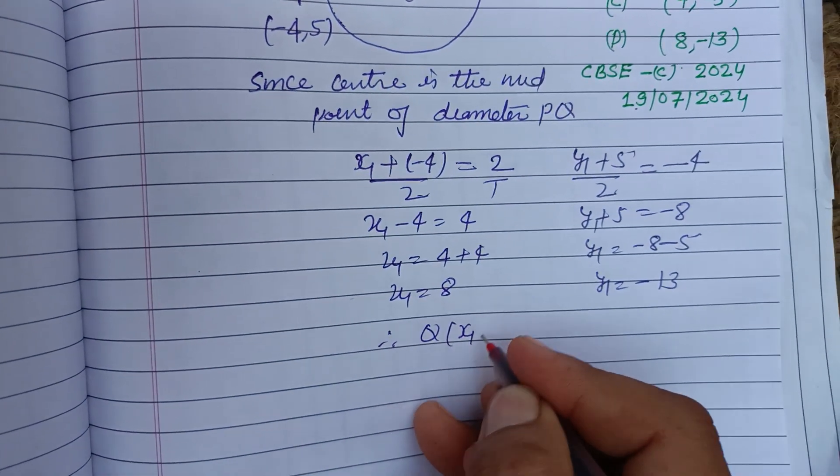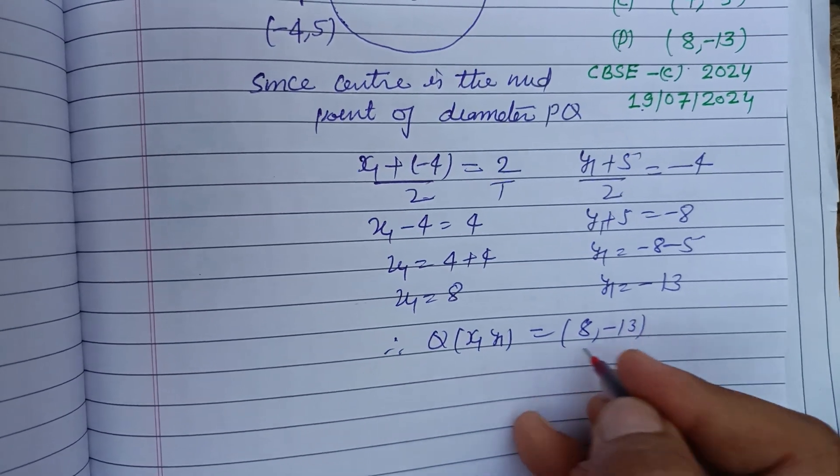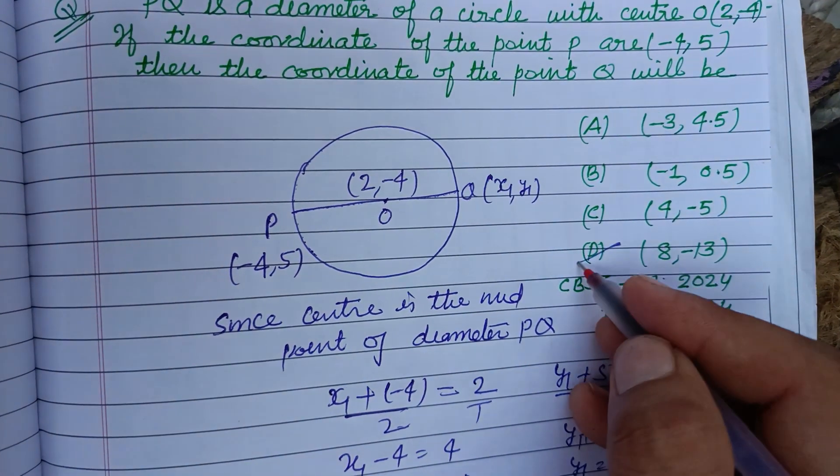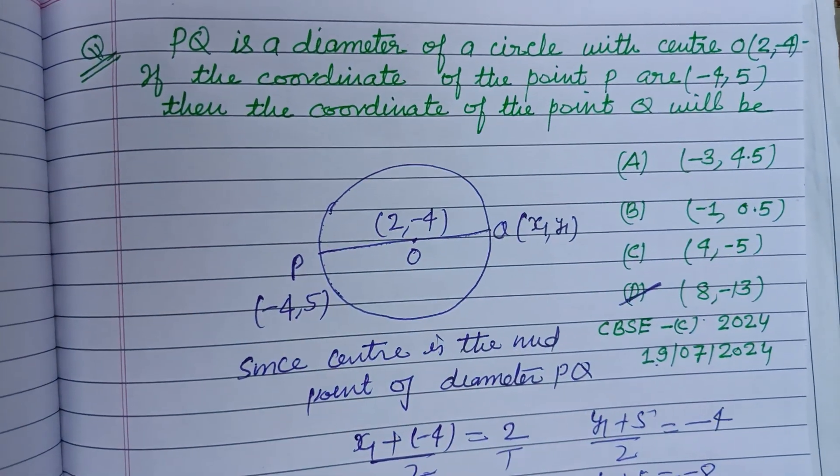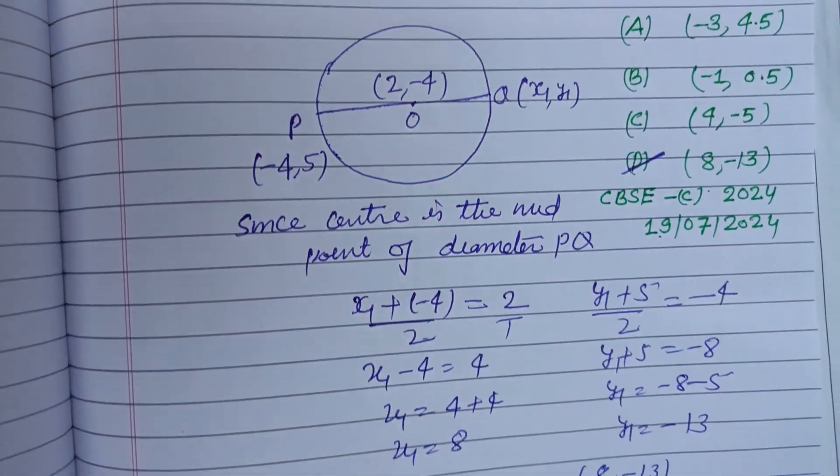Therefore Q(x1, y1) = (8, -13). 8 and -13 is the correct answer which is found in option D. So option D is correct. I hope you got it. Please like the video, subscribe the channel, thanks for watching.